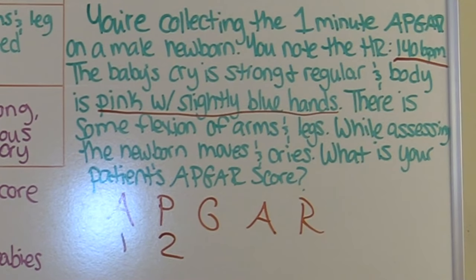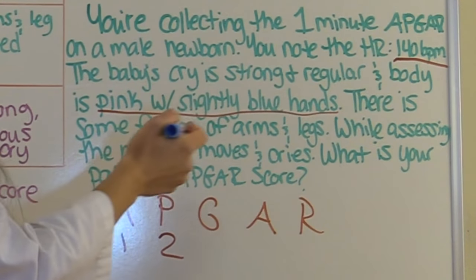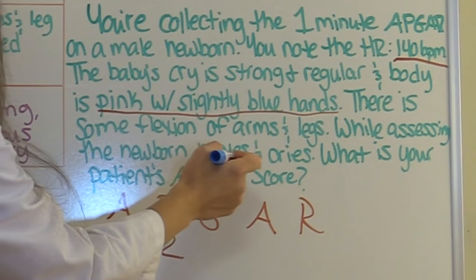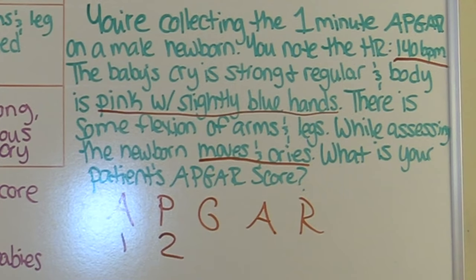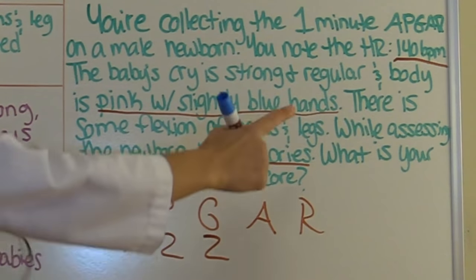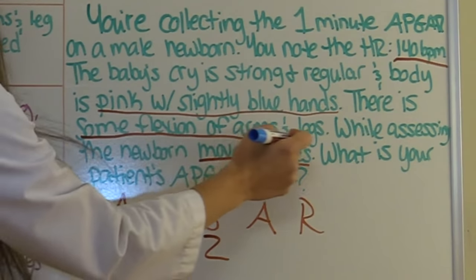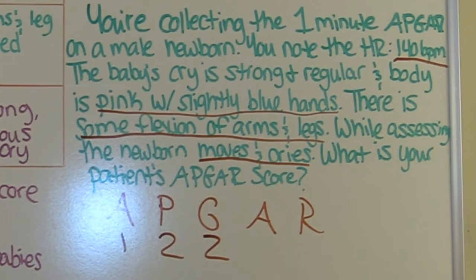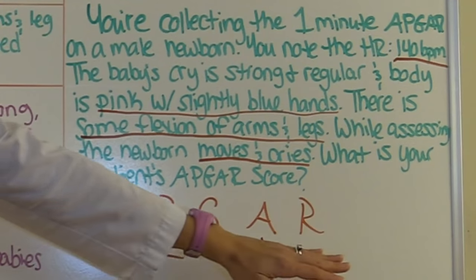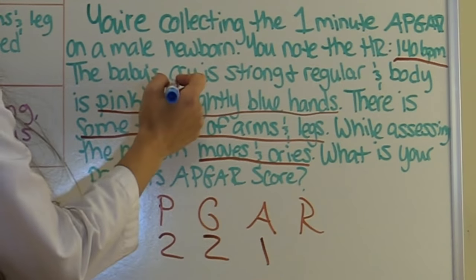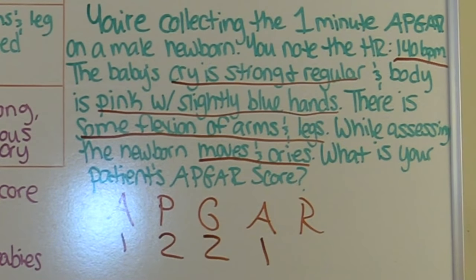G for grimace, which is reflex irritability: while assessing the newborn, it moves and cries — it's not just grimacing, it's actively crying — so it gets a two. The other A for activity, looking at muscle tone: there's some flexion of the arms and legs, not total flexion, so the baby gets a one. It would get a two if it had full overall flexion. R for respiratory effort: the baby's cry is regular and strong, so that gets a two.